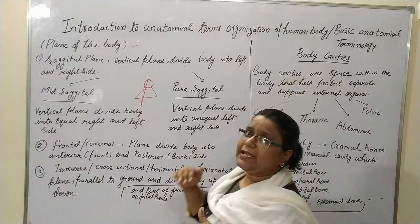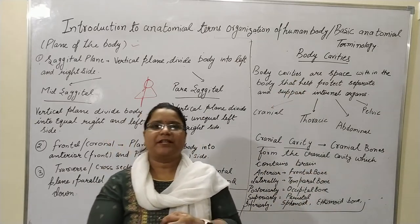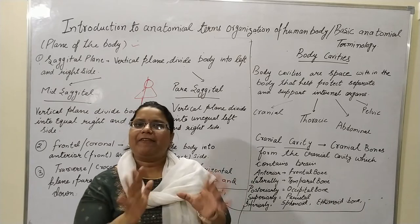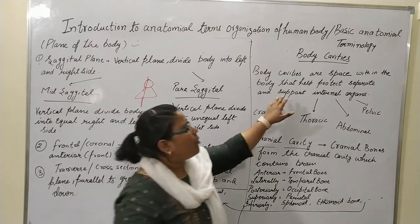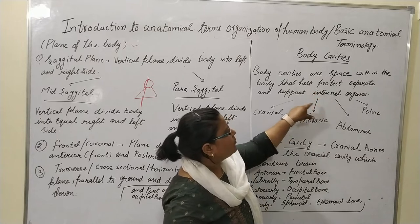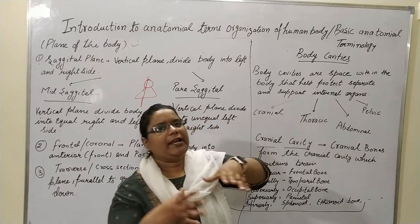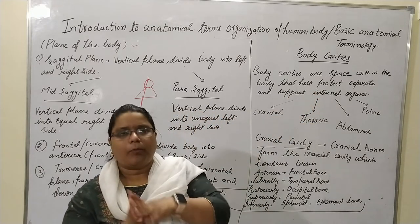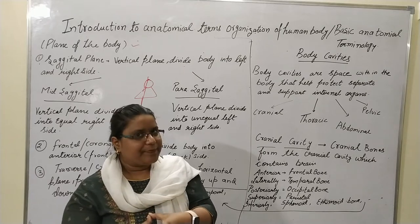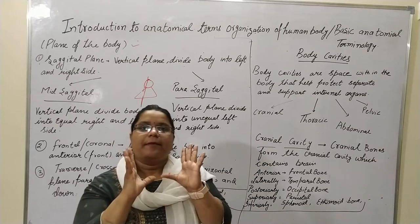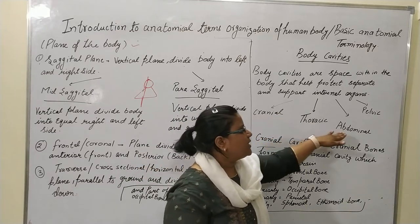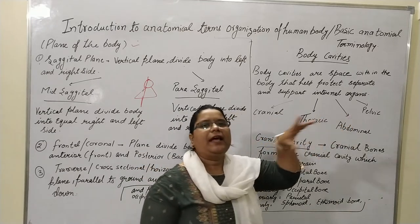Now let's talk about the body cavities. The body cavities are spaces within the body that help protect, separate, and support internal organs. Generally, body cavities are four: cranial, thoracic, abdominal, and pelvic.